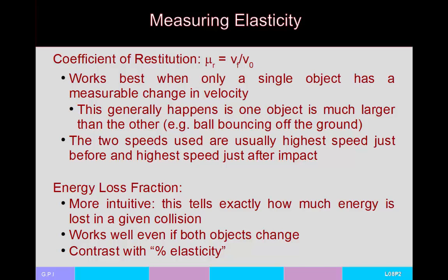There are various ways to measure how elastic or inelastic a collision is. The most common is the coefficient of restitution, which is the ratio of the final speed after a collision to the initial speed before it. In the simplest case — a ball bouncing off the ground — this is the ball's speed leaving the ground divided by its speed just before hitting.